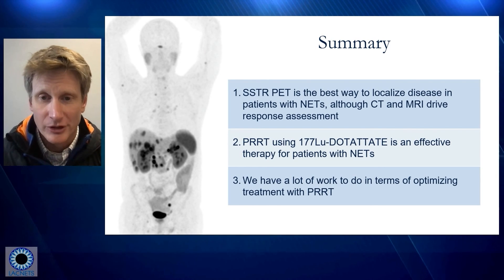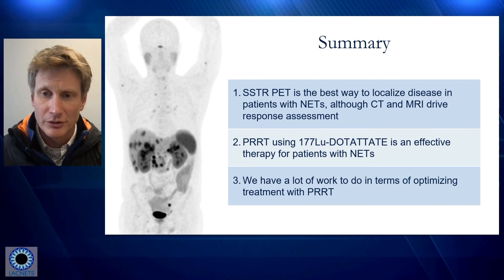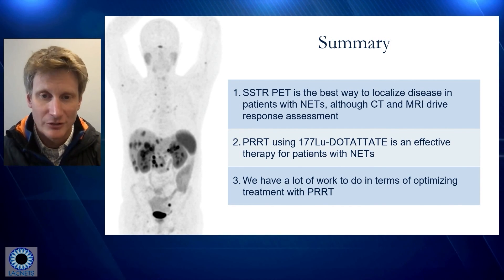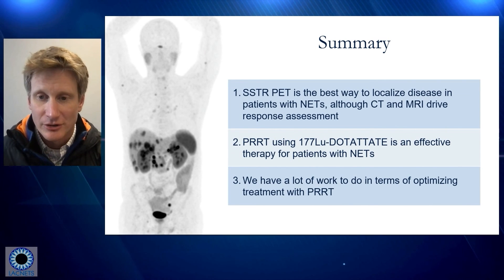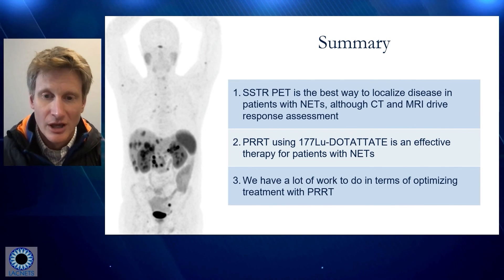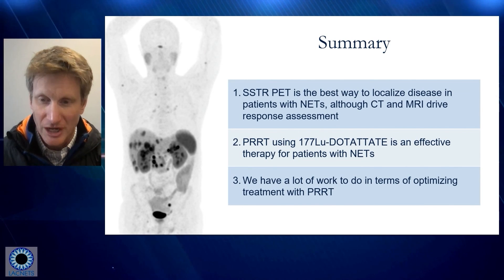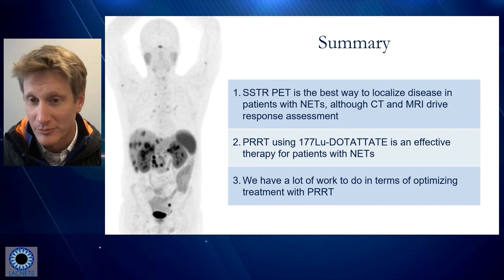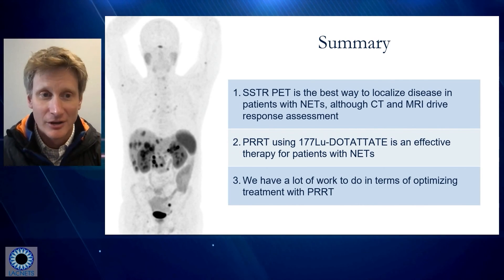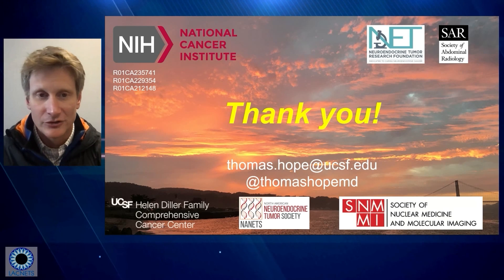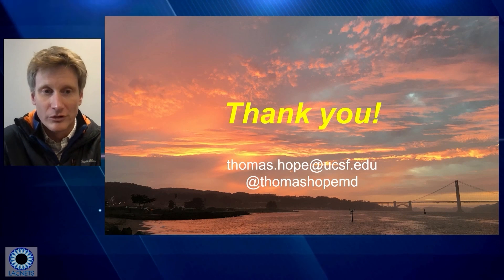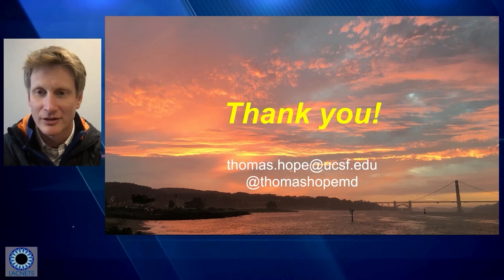In summary, somatostatin receptor PET is the best way to localize disease in patients with neuroendocrine tumors, although it's important to remember that CT and MRI really drive our ability to evaluate response. PRRT using lutetium DOTATATE is an effective therapy for patients with neuroendocrine tumors, although there is a lot of work to do in terms of optimizing this treatment moving forward. Hopefully we can discuss that further during the question and answer period. Thank you to everyone who has funded my research, and I look forward to talking live in the near future.